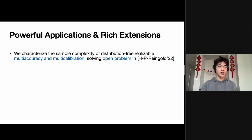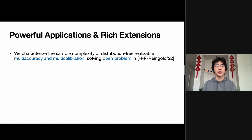The main application we show for comparative learning in this paper is a sample complexity characterization for distribution-free realizable multi-accuracy and multi-calibration. This result solves an open problem in our earlier paper with our advisor Omer Reingold. I will talk more about this result in the next few slides.